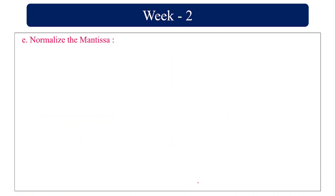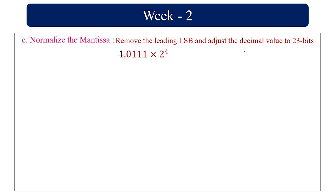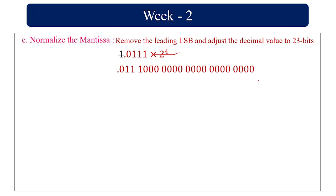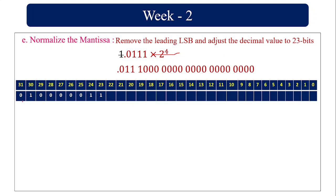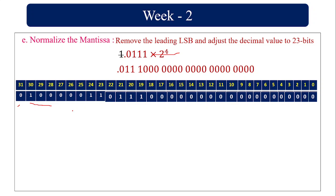To normalize the 23-bit mantissa, remove the leading 1 (the MSB) since it is always 1 for a normalized value, and adjust the decimal value. Taking 0.0111, which is already 4 bits, I pad with zeros to make it 23 bits. The entire 32-bit floating point representation of decimal 23 is now complete with sign, exponent, and mantissa.